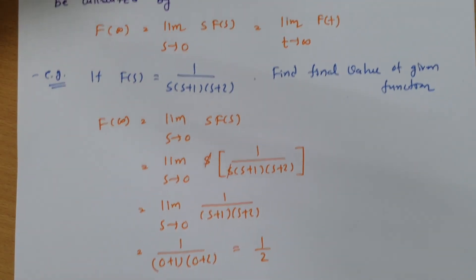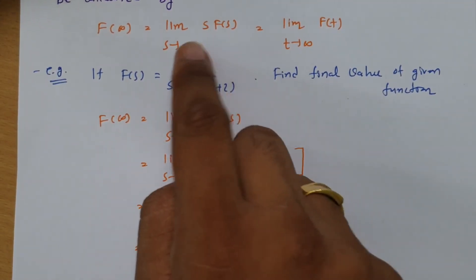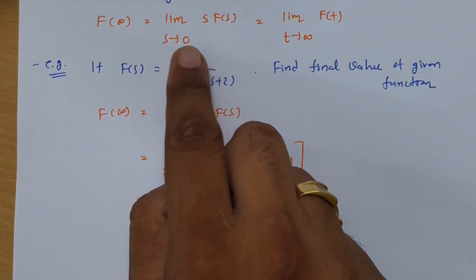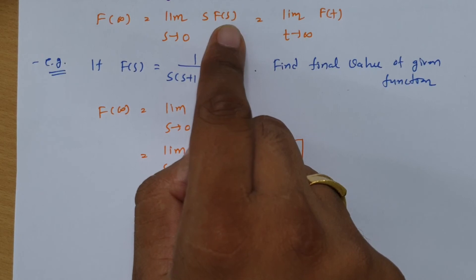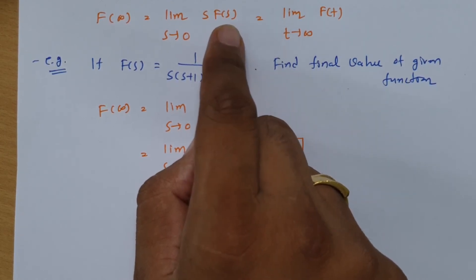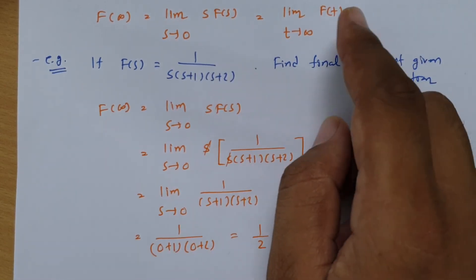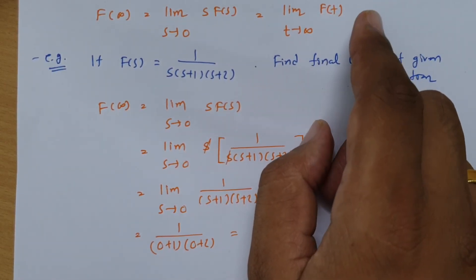Here one thing that we need to understand. For initial value, s tends to infinite. And for final value, s tends to 0. And in the function, don't consider F(s) only. It should be s into F(s). While in case of time domain, it should be f(t) only.